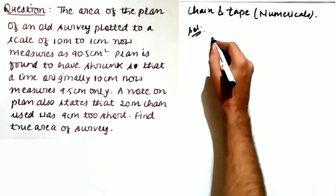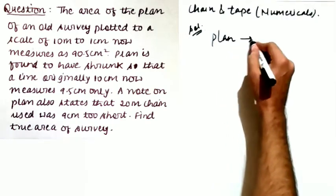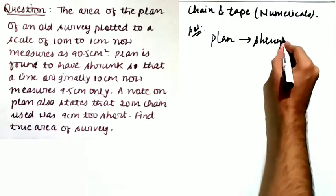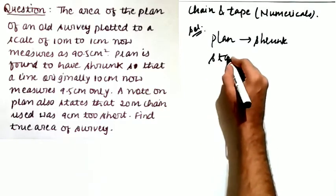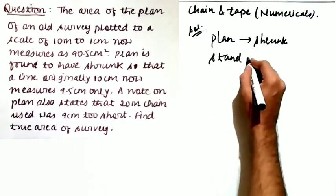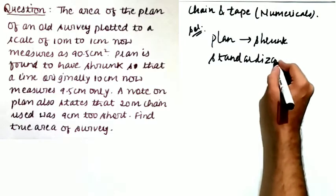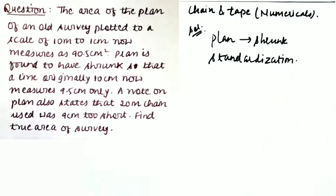In this problem there are two things to be noted. First, the plan has shrunk. Second, all measurements that were made earlier were made with a defective chain, since the statement says the 20 meter chain used was 9 centimeters too short. That means you have to apply a standardization correction as well. Keep both these things in mind.